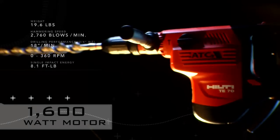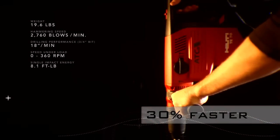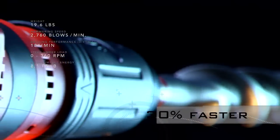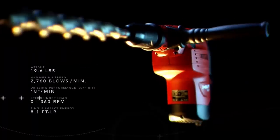With its 1600 watt motor, the TE70ATC is 20% stronger and 30% faster than the competition. Now that's a tool to have on your team. But speed isn't the only thing that's important. You'll have to play smart, too.